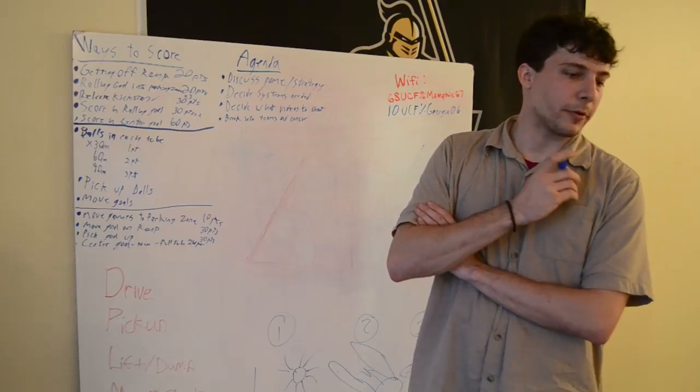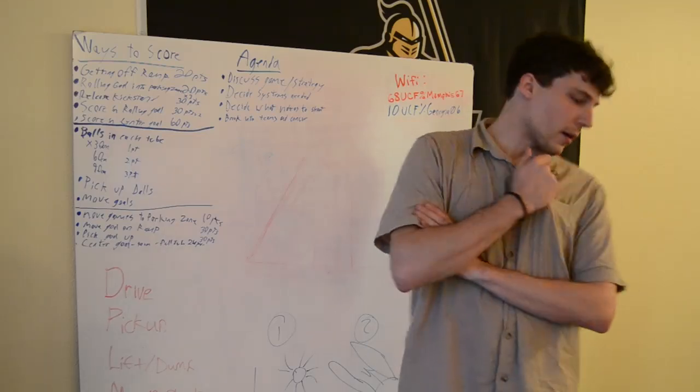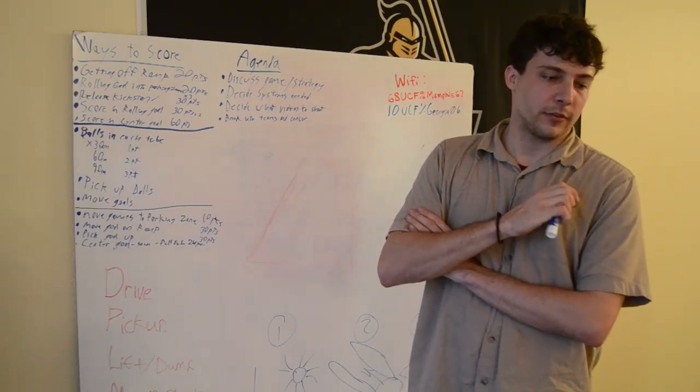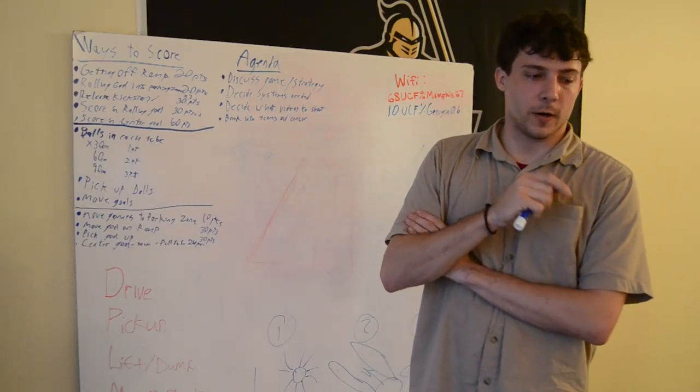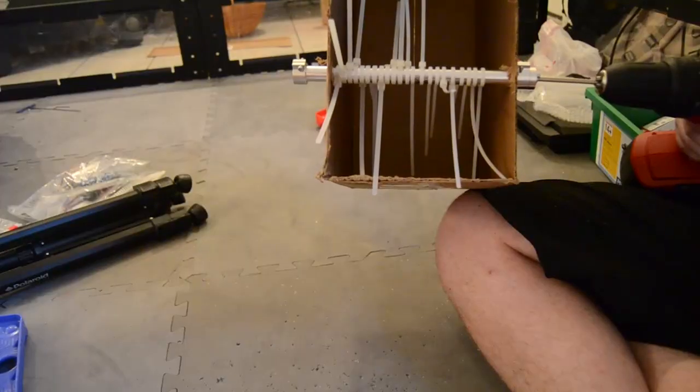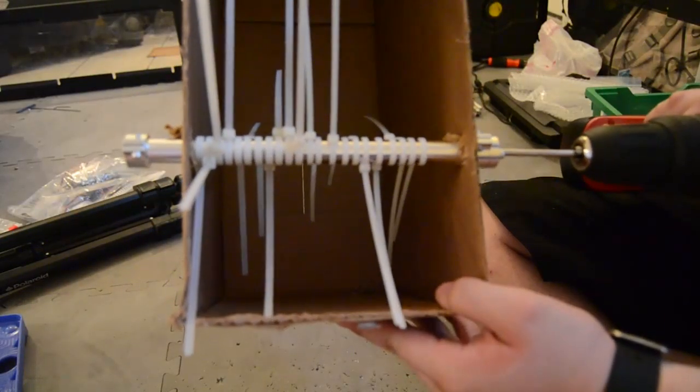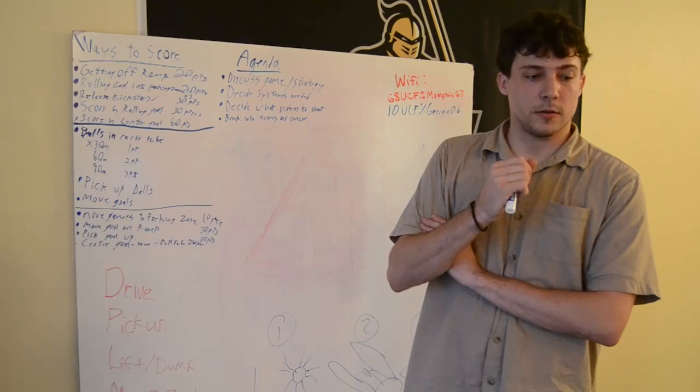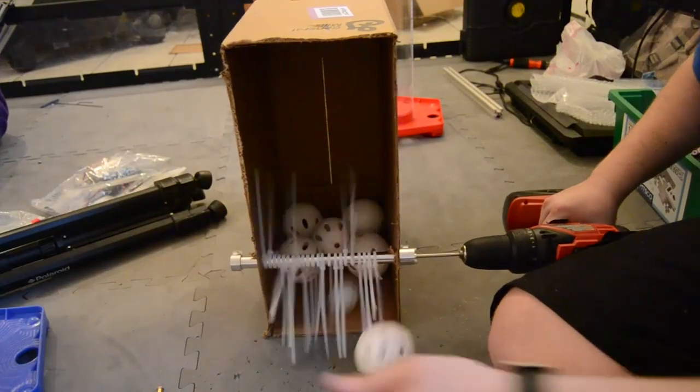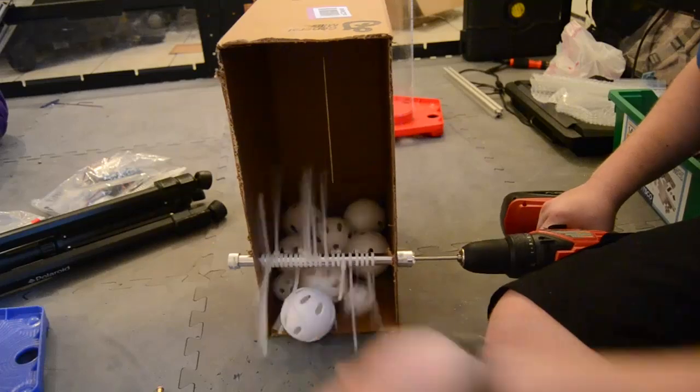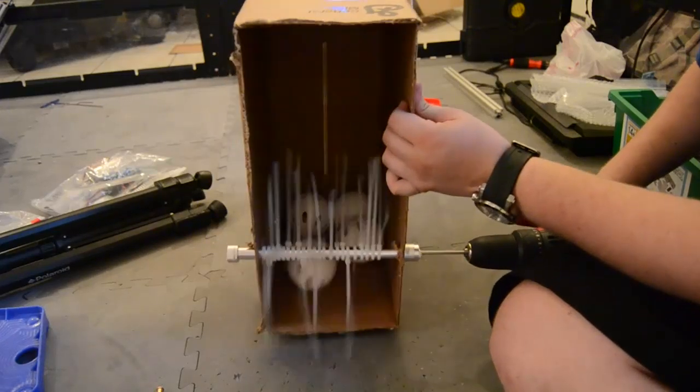We did a couple of prototypes for our intake system. The first one was a zip tie beater bar where we attached a bunch of zip ties onto one of those aluminum bar tubes that come in the FTC kit and we attached the output to the drill and put it on a box. That worked pretty well. The intake fed pretty well.